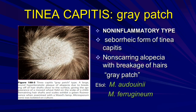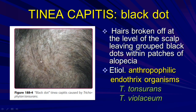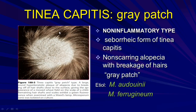The gray patch type of tinea capitis shows gray patches with black dots. The etiology includes Microsporum audouinii and Microsporum ferrugineum. This is a hyperkeratotic plaque with white appearance seen in the scalp area.